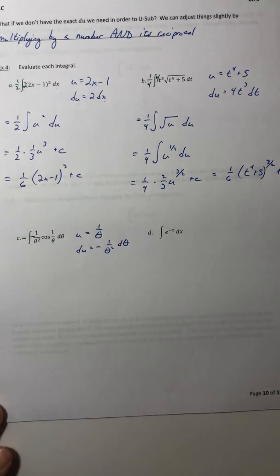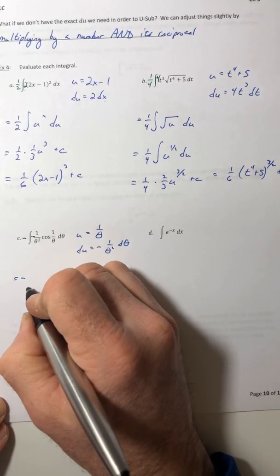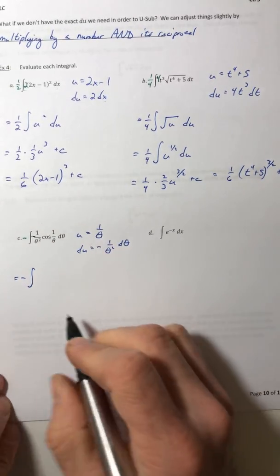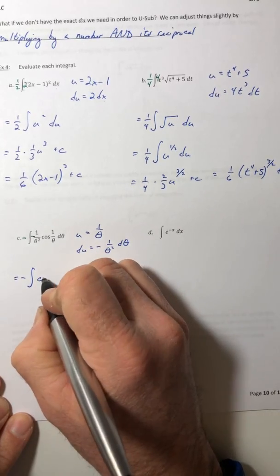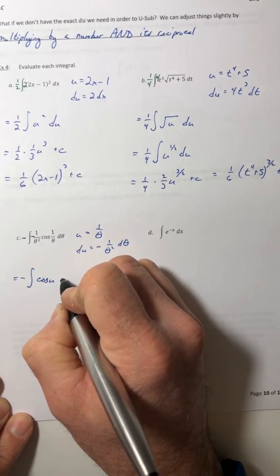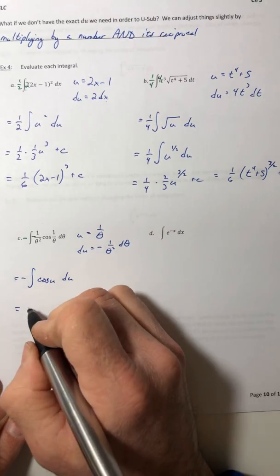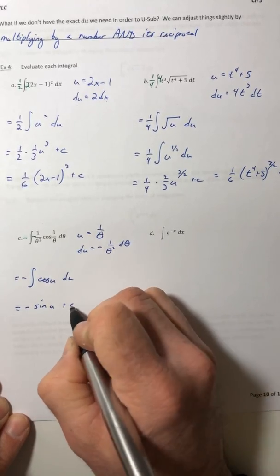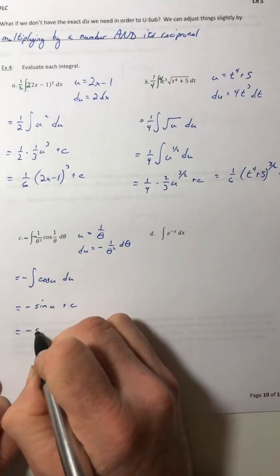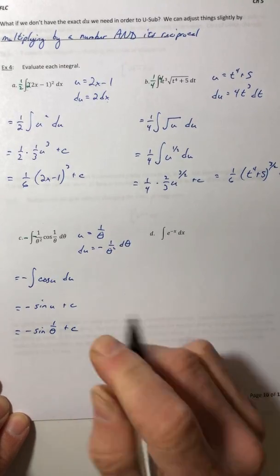So I can multiply in by a negative as long as I do a negative on the outside. Negative on the outside, cosine of u du. The integral of cosine is sine and that negative stays out in the front. And then switch it back, so negative sine of one over theta plus c.